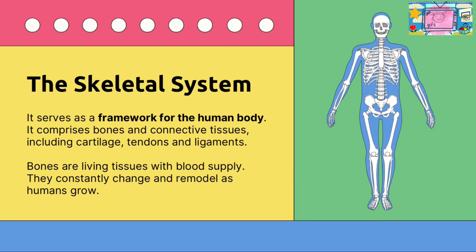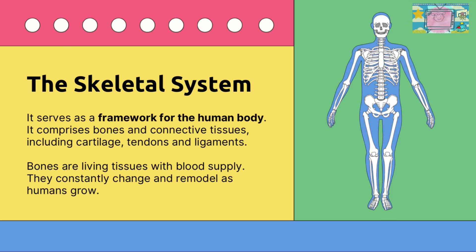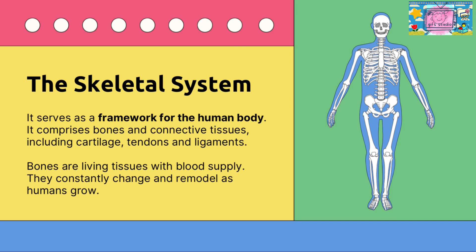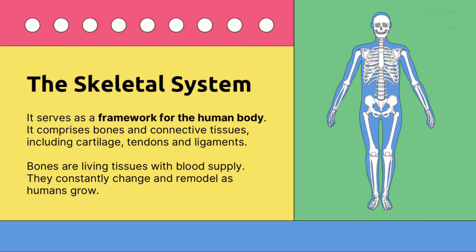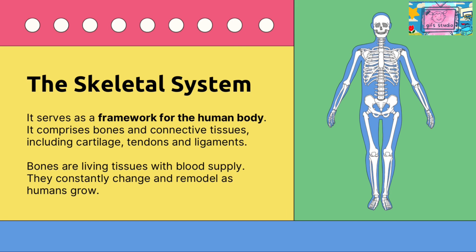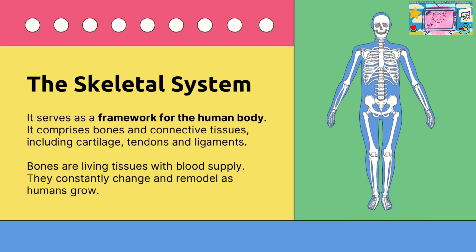The Skeletal System serves as a framework for the human body. It comprises bones and connective tissues, including cartilage, tendons, and ligaments. Bones are living tissues with a blood supply — they constantly change and remodel as humans grow.